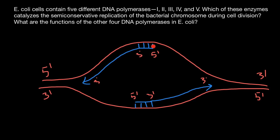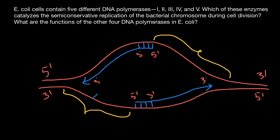What about this space here? Because this replication bubble would grow — so what would happen with this space? DNA would also grow here, but in order to grow DNA, because it can only grow from 5' to 3', new primers would be added here. New primers would have 5' and 3', and a new strand would grow discontinuously in small fragments in this direction.